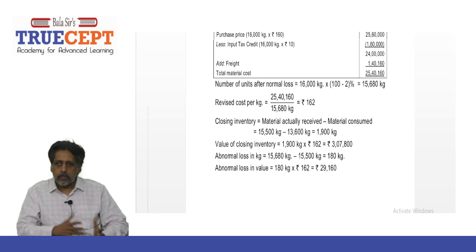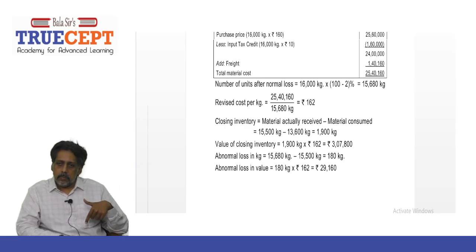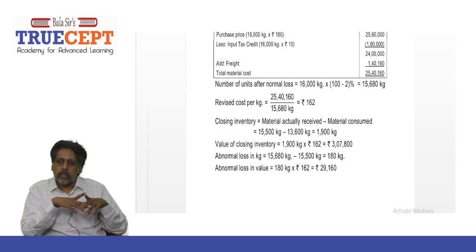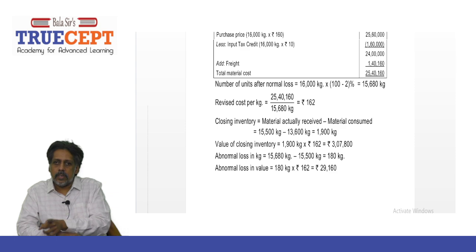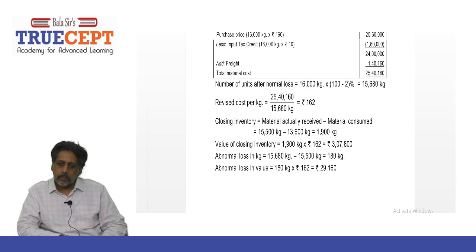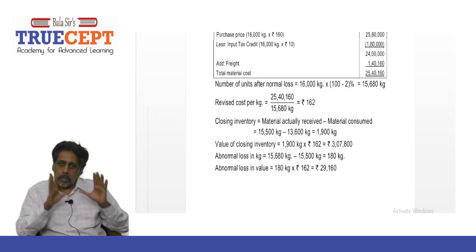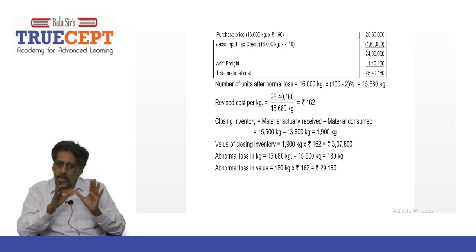Closing inventory: material actually received minus material used = 15,500 minus 13,600 kilograms = 1,900 kilograms of unused material, valued at rupees 162 per kg. Value of closing inventory = 1,900 × 162 = rupees 3,07,800. That is your closing inventory of raw material.